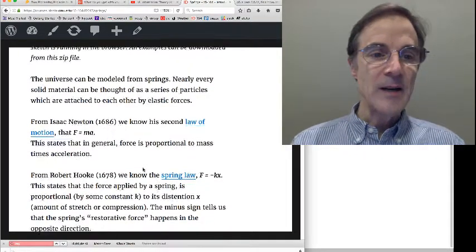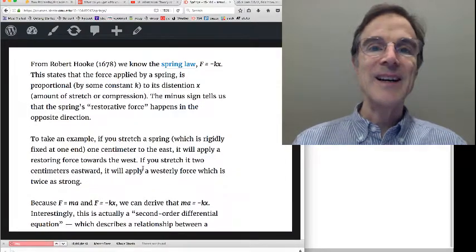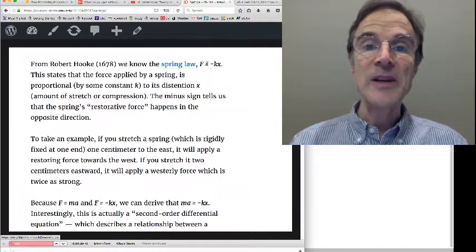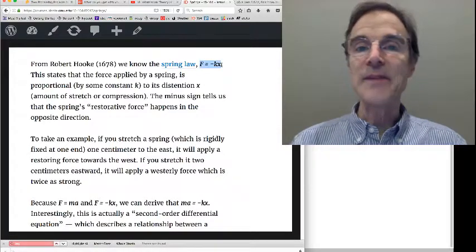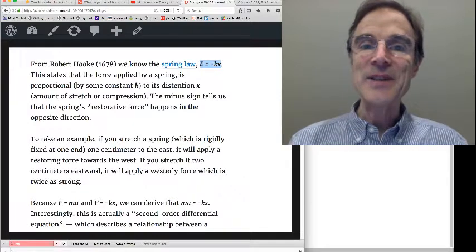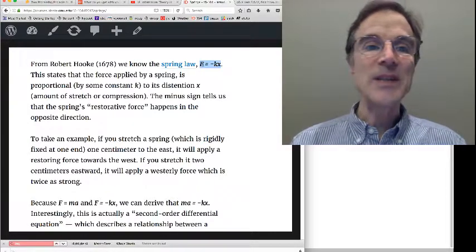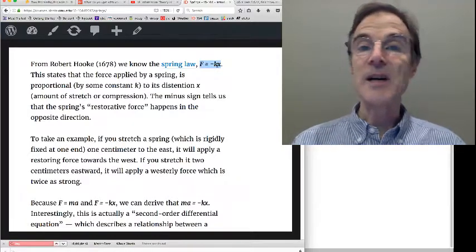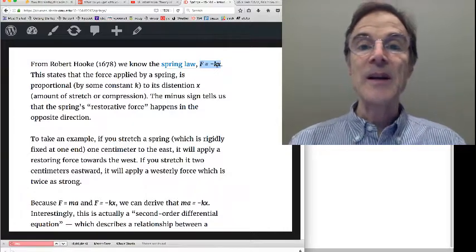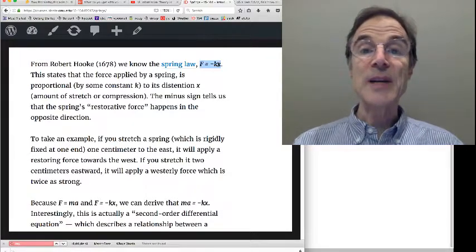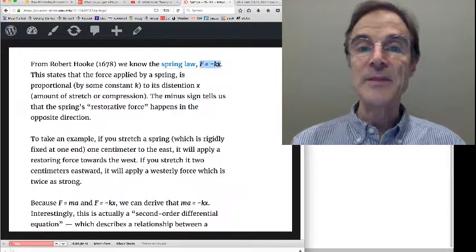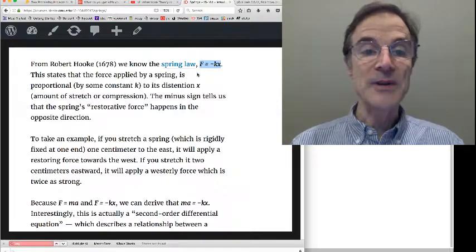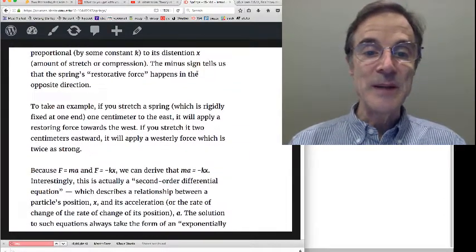First of all, we'll jump to Robert Hooke. He discovered the spring law, which is f equals minus kx. So what this means is the force applied by a spring is some constant k, called the spring constant, multiplied by the stretch, how far the spring is stretched or compressed. It's a very simple rule, easy to implement.